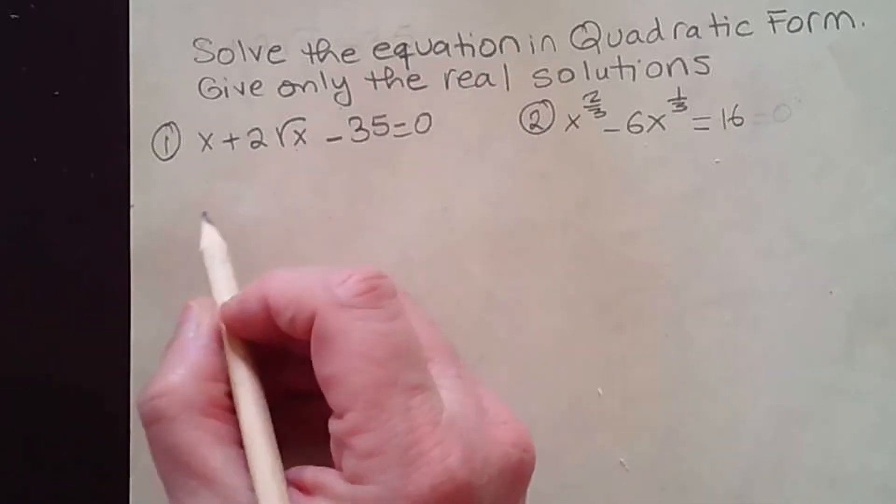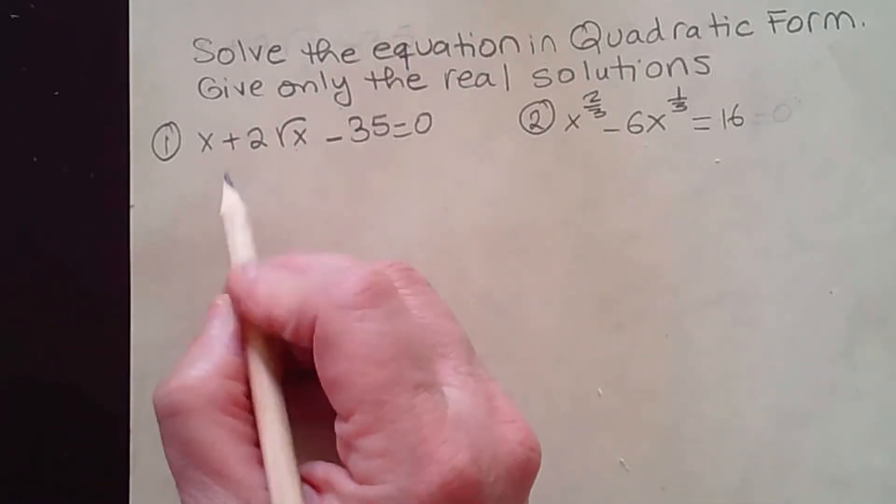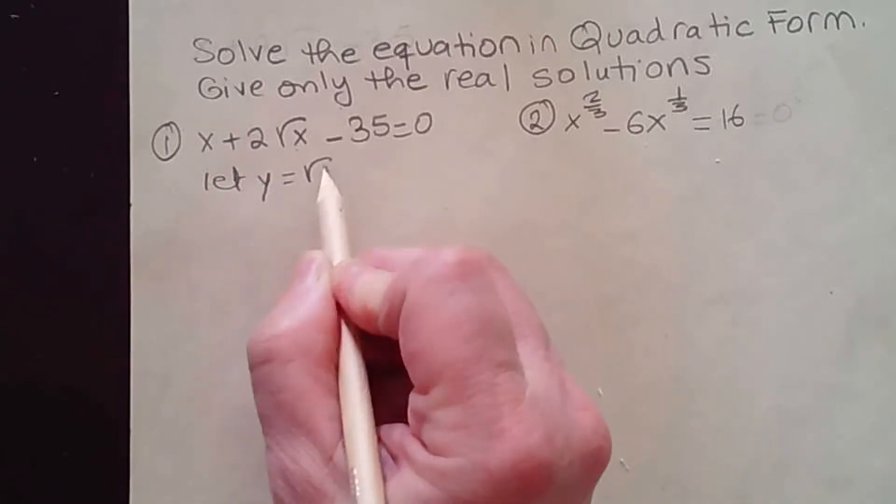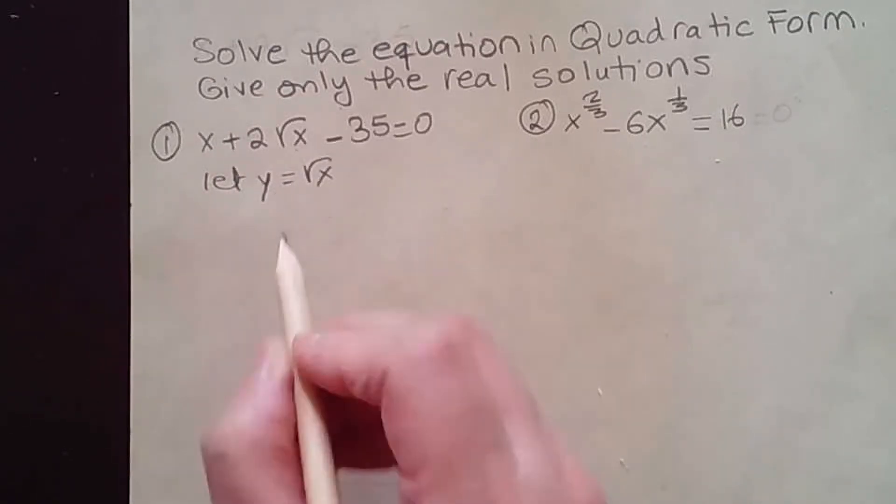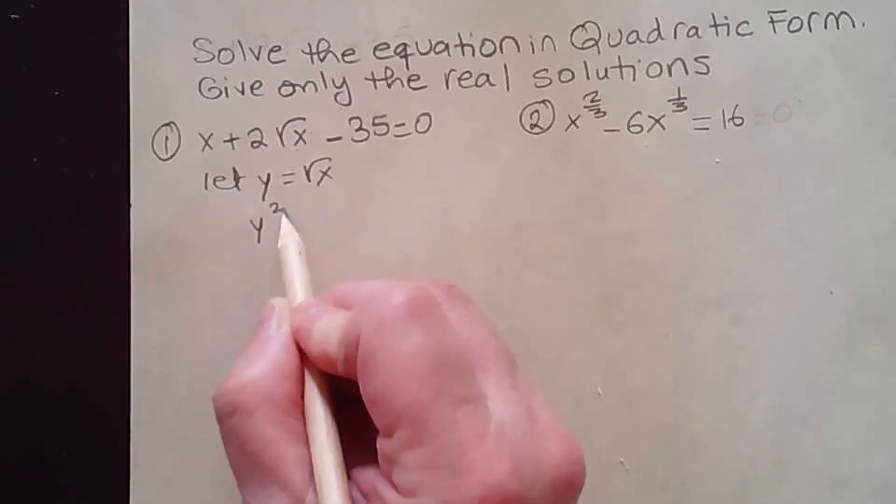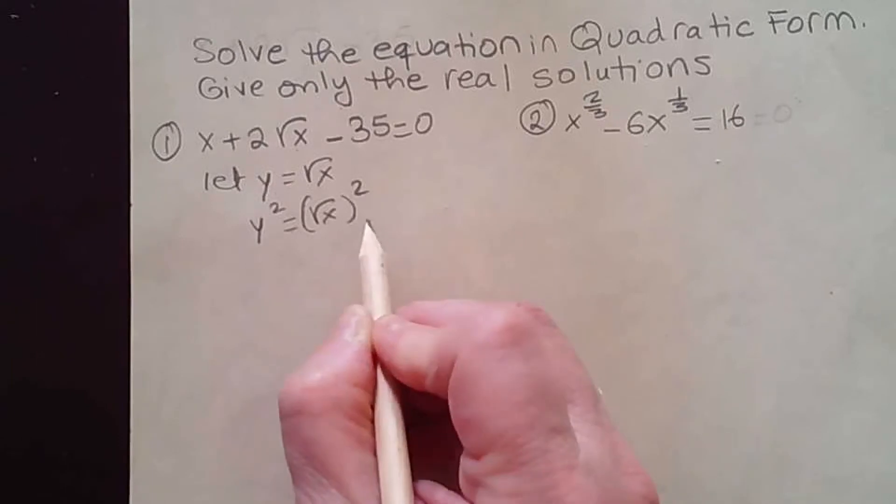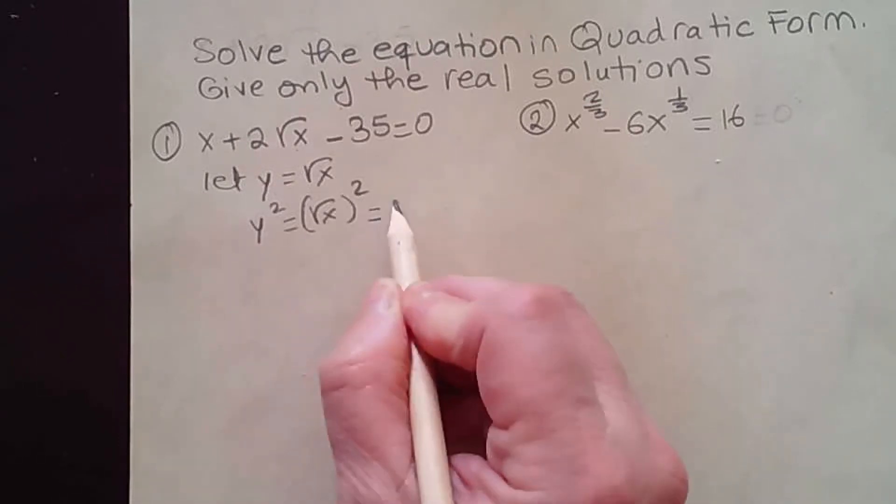You can think about it this way. If you let some variable, if you want to make it y equal to square root of x, the square of y is simply the square root of x squared, and that's just x.